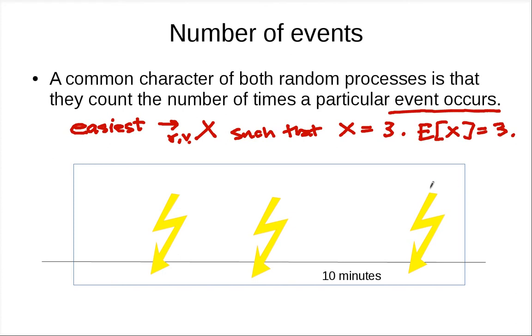But it might not look that random. You can have a little bit more complicated random variable, say a better one Y, such that Y is going to be 6 or 0, with probability 1/2 each.